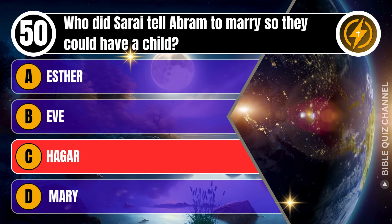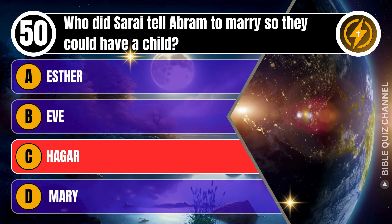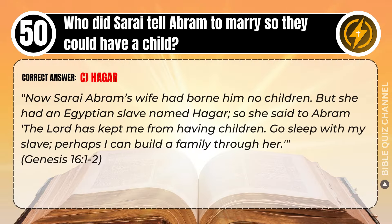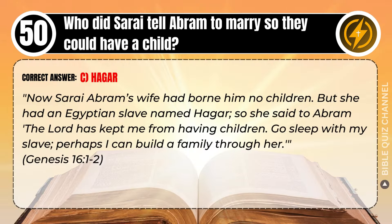Correct answer: C. Hagar. Explaining the Bible — Now Sarai, Abram's wife, had borne him no children. But she had an Egyptian slave named Hagar. So she said to Abram, 'The Lord has kept me from having children. Go, sleep with my slave. Perhaps I can build a family through her.' Genesis, chapter 16, verse 1-2.